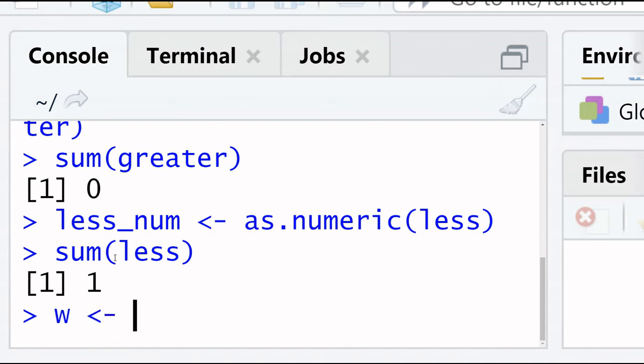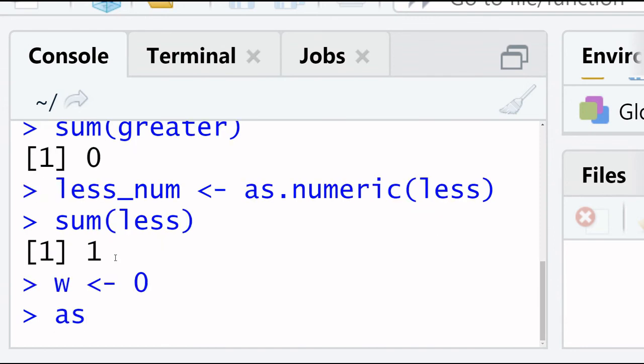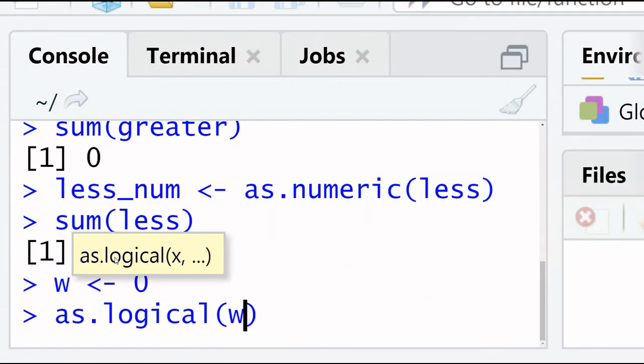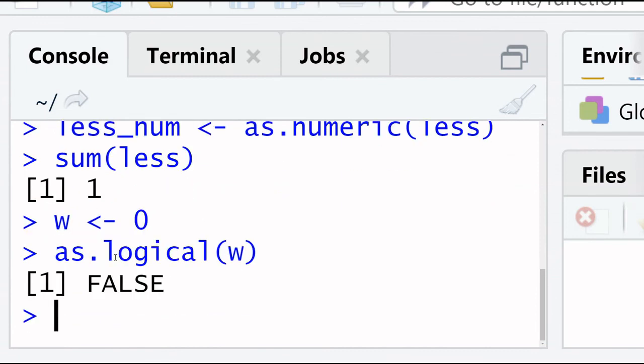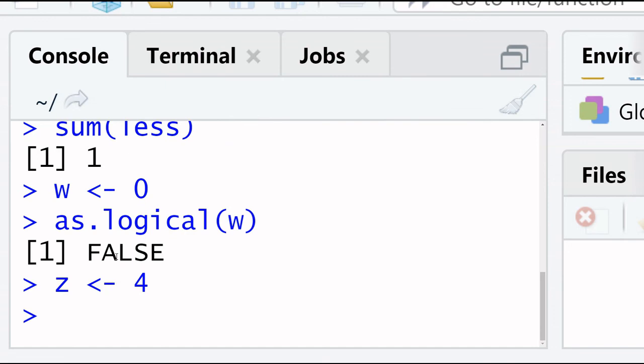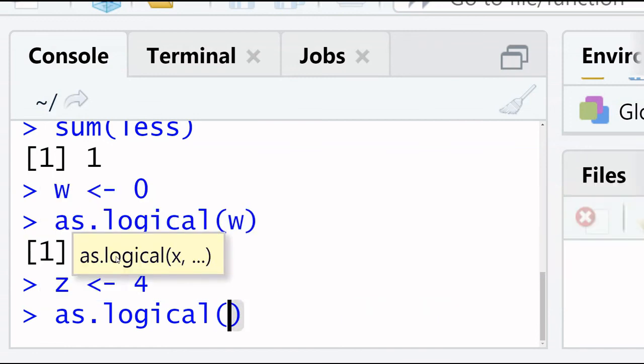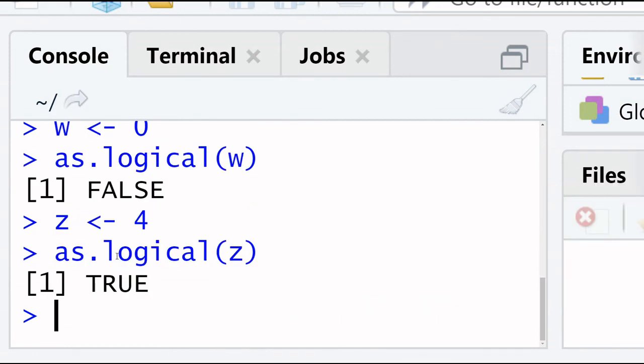Assume variable w gets 0. as.logical variable name, false. So now this is convert into logical variable. Assume name z, as.logical z, true.